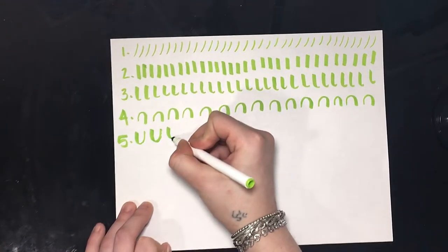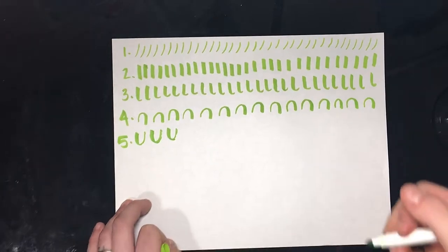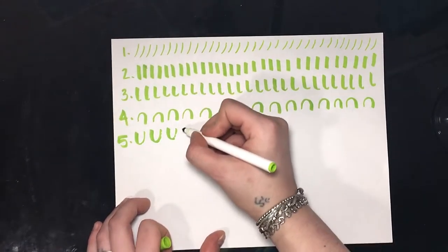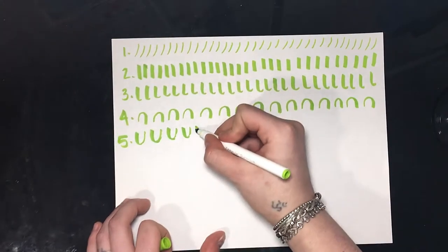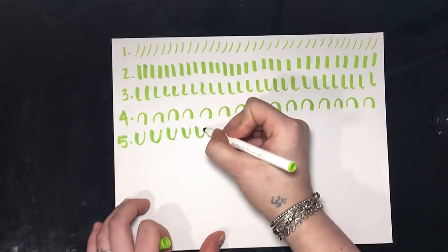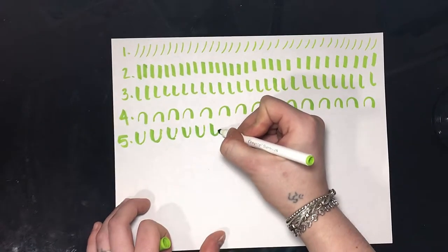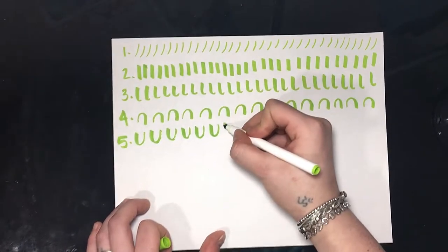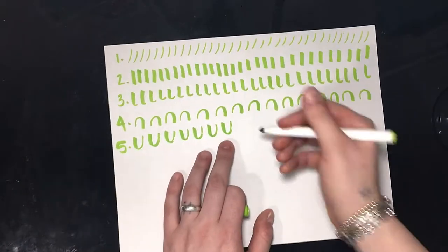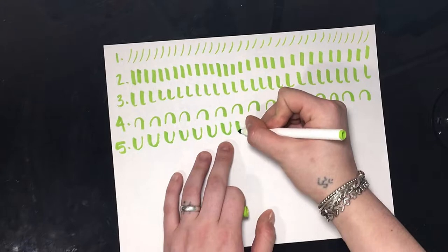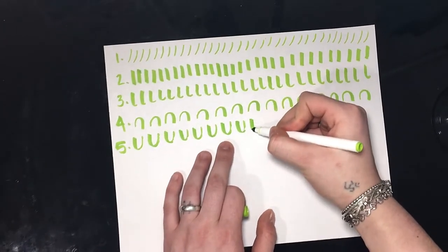And like I said, I am still a beginner. So this is one I have trouble with. You'll notice. Put pressure going down and lift when you go up. And again, just make a noticeable difference between your down stroke and your up stroke. It doesn't have to be perfect. Especially when you're just starting out.